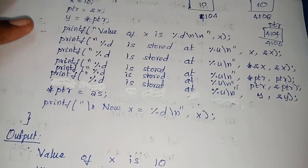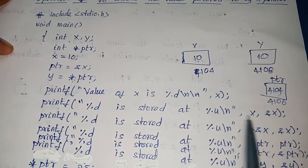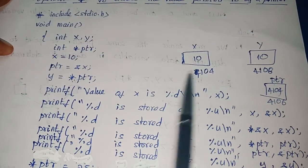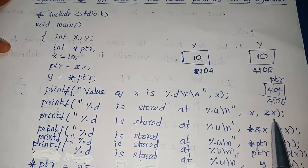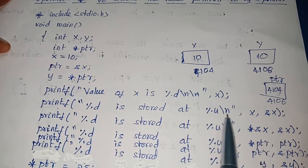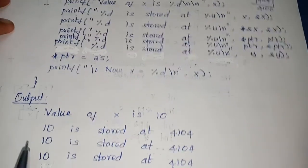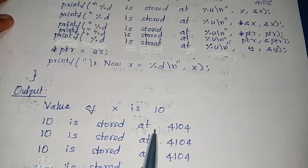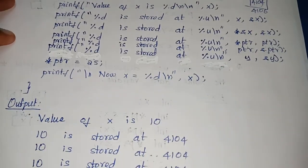The second printf statement: '%d' with argument &x — which is an unsigned integer. &x is the address of x, so this statement gives the address of x. The output will be: '10 is stored at' — what is the address of x? — 4104.